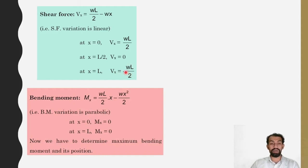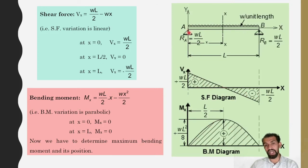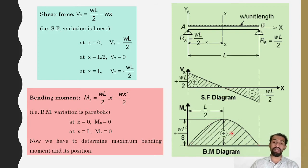The bending moment is Mx equals W·L by 2 into x minus w·x² by 2. The bending moment variation is parabolic. The point where shear force equals zero is where the maximum bending moment occurs — at x equals L by 2.